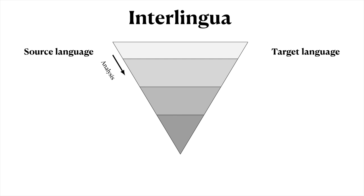Let's finally look at going even deeper — this involves interlingua. No one has ever really succeeded in developing a truly language-independent semantic representation that is interlingual in nature — one that can represent the deep meaning of any language equally well. Many have tried, and there have been machine translation systems, particularly in the late 20th century, that claimed to be interlingual systems, though these were usually specific to a particular domain and a small set of often-related languages.